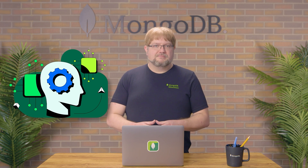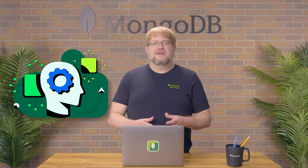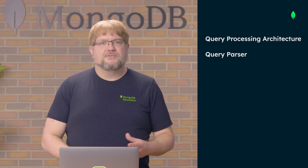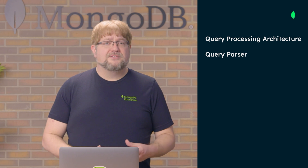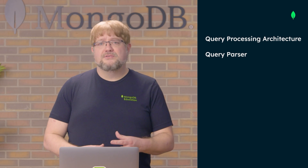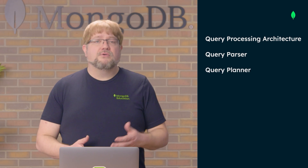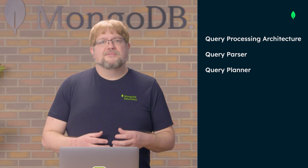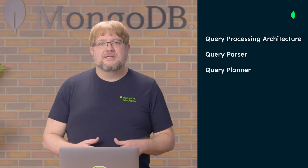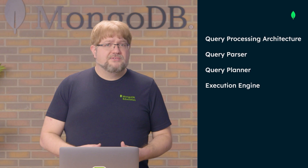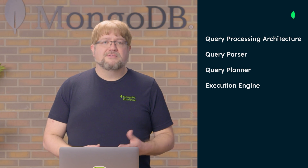The last architectural component we'll discuss is MongoDB's query planner — the brain behind query execution. The query planner is part of a larger query processing architecture that consists of three components: the parser, which interprets, validates, and translates the client's query into an internal format usable by MongoDB; the query planner, or query optimizer, which selects the most efficient query plan to execute that query and then caches that plan for later use; and the execution engine, which carries out the chosen query plan and returns the resulting documents to the client.